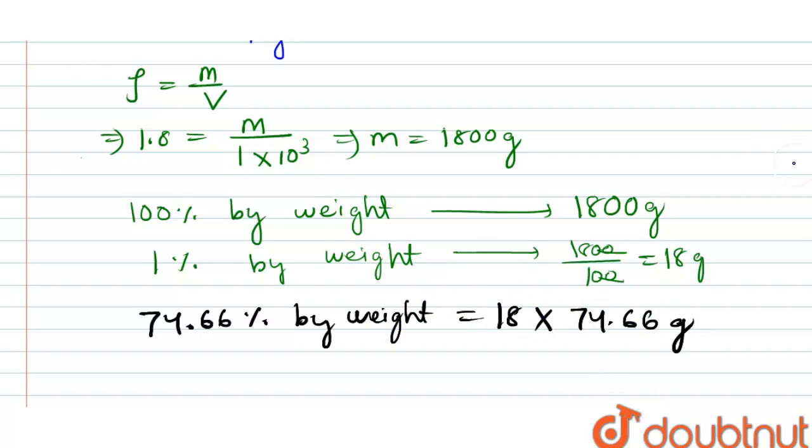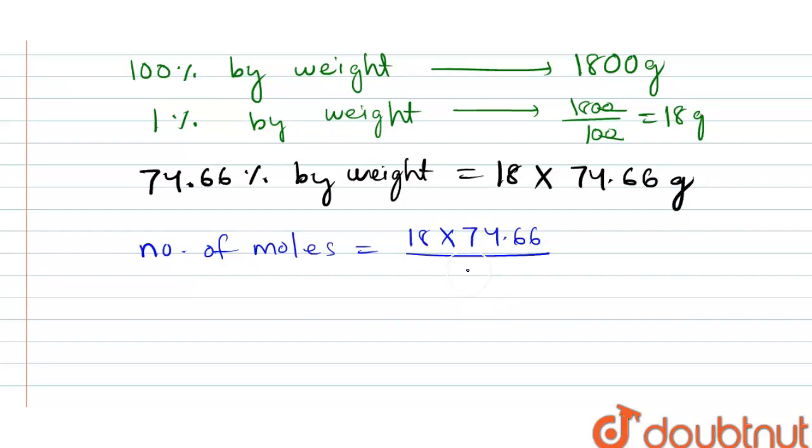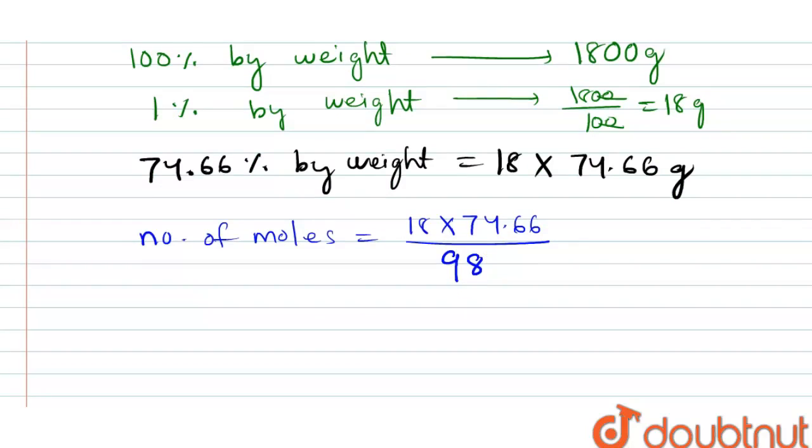Now we can calculate number of moles. Number of moles is equal to given weight, that is 18 into 74.66, divided by molecular weight, that is the molecular weight of sulfuric acid, 98 gram.